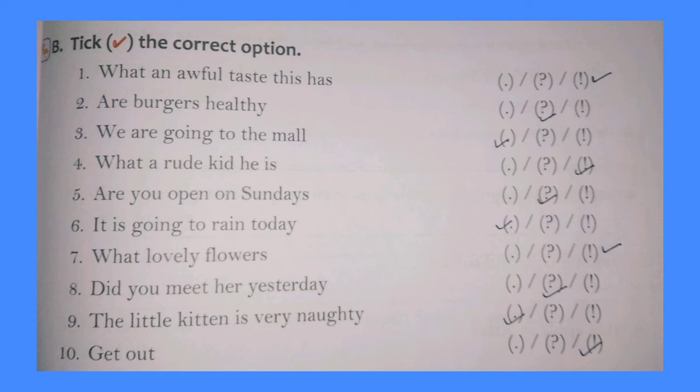'Are burgers healthy?' — it's a question, so we use a question mark. 'We are going to the market.' — it is a statement, so we use a full stop. 'What a rude kid he is.' — it's an exclamatory sentence, so we put an exclamation mark. 'Are you open on Sundays?' — it's a question, so we use a question mark.